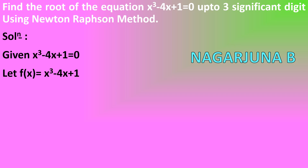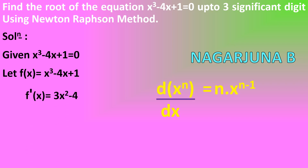To find the root using the Newton-Raphson method, we will be using f'(x) in the formula, so we need to find the differentiation of f(x) with respect to x. The differentiation formula for xⁿ is d(xⁿ)/dx = n·x^(n−1). Differentiating f(x) with respect to x, we get f'(x) = 3x² − 4.